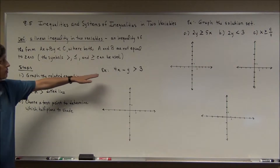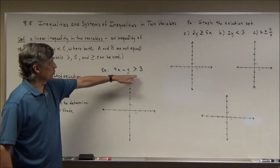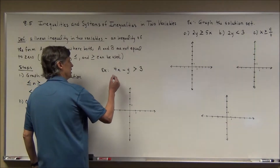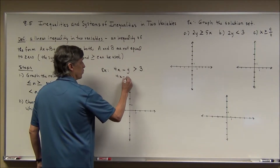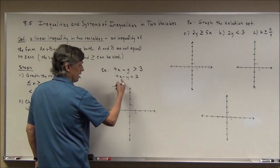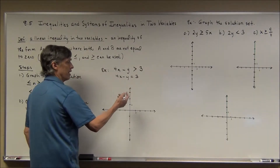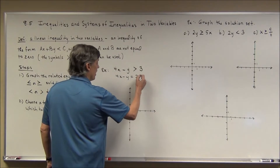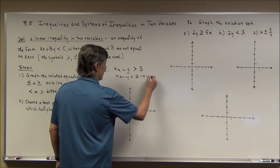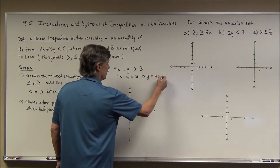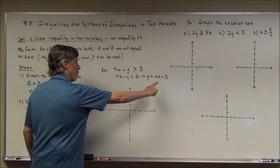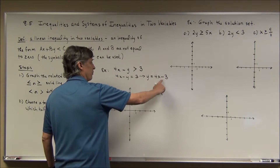Here's a simple example: graph the solution set of 4x minus y is greater than 3. First, I write the related equation: 4x minus y equals 3. I manipulate it into slope-intercept form by adding y to both sides and subtracting 3, giving y equals 4x minus 3. My y-intercept is at (0, −3) and my slope is 4, which is the same as 4 over 1.